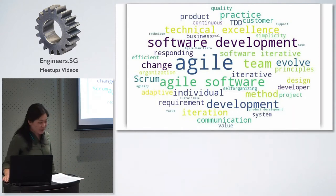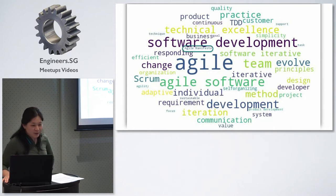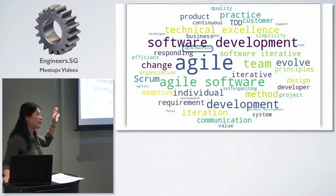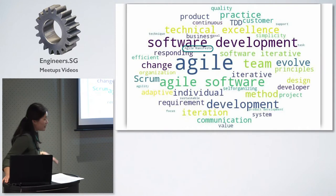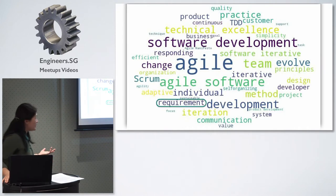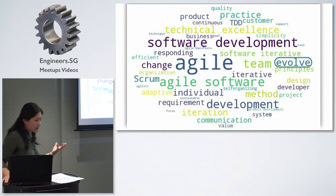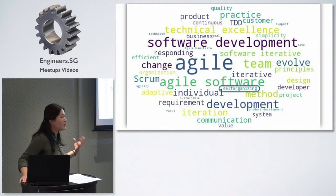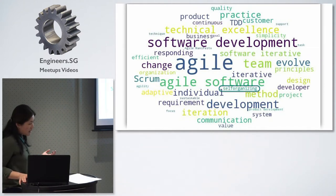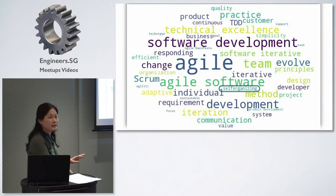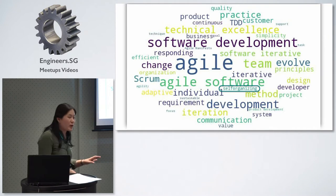This is Agile. Let's figure out what it's all about. In 2001, 17 software practitioners came together and coined the term Agile. They came out with the Agile Manifesto. The idea is that requirements and solutions evolve through time, and the collaborative effort of self-organizing and cross-functional teams works a lot better. Basically, requirements are not fixed and evolve. That's why we need self-organizing and cross-functional teams.